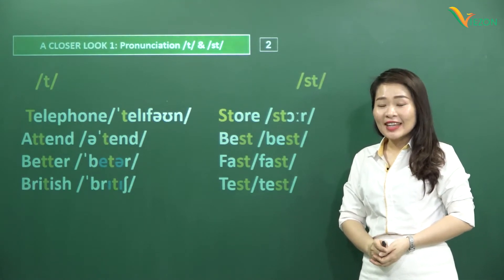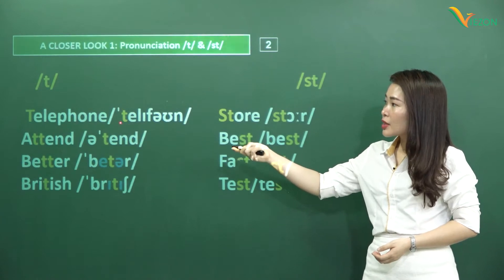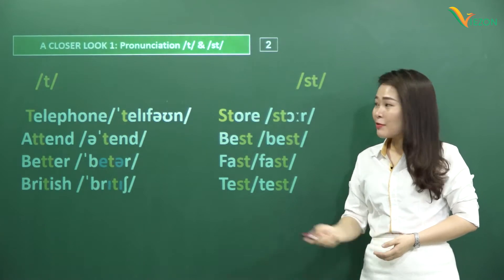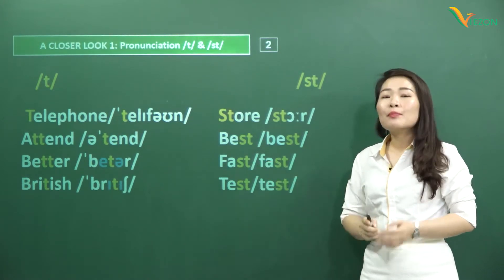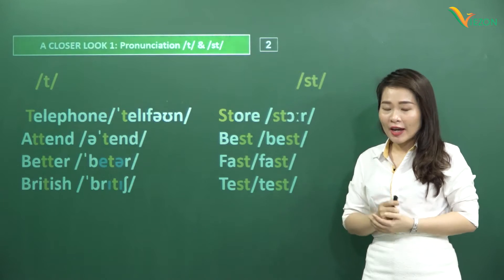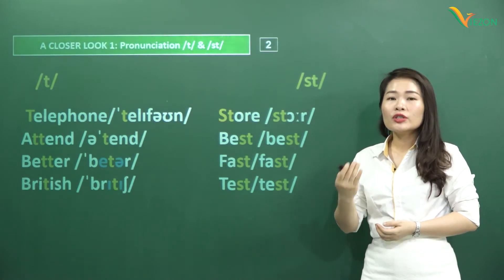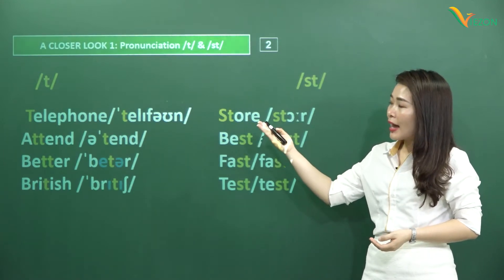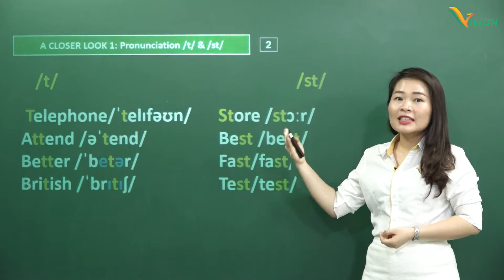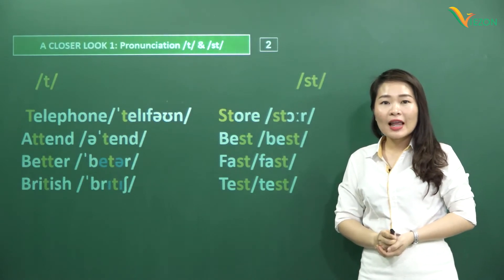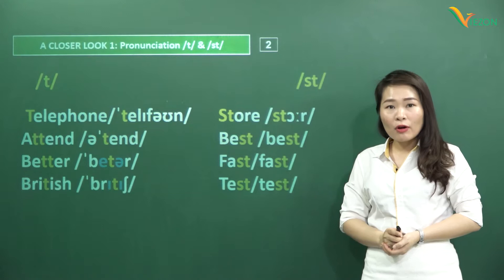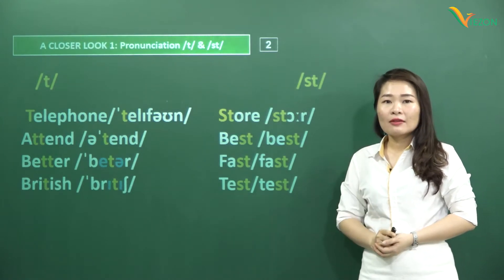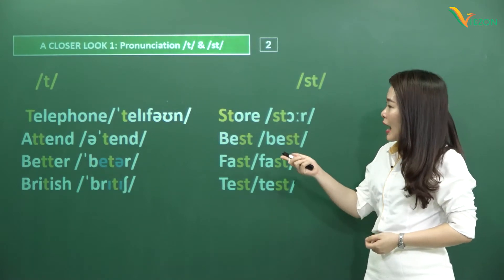For example, take the word 'telephone'. The stressed syllable is 'tel-', so the /t/ here is pronounced fully and clearly: 'telephone'. We don't just say 'telephone' flatly — we must aspirate it: 'telephone'.